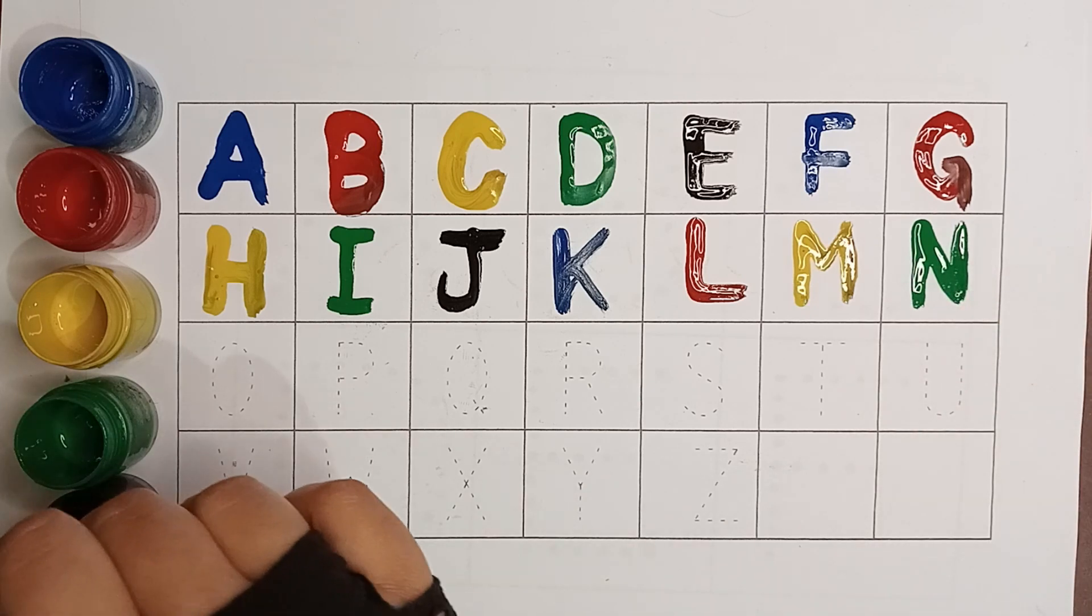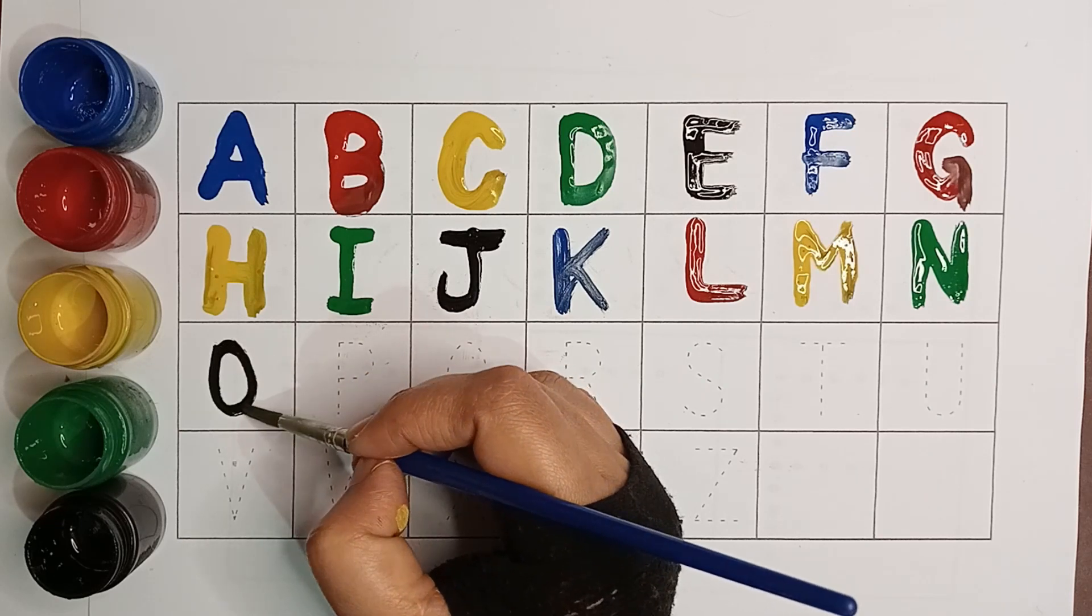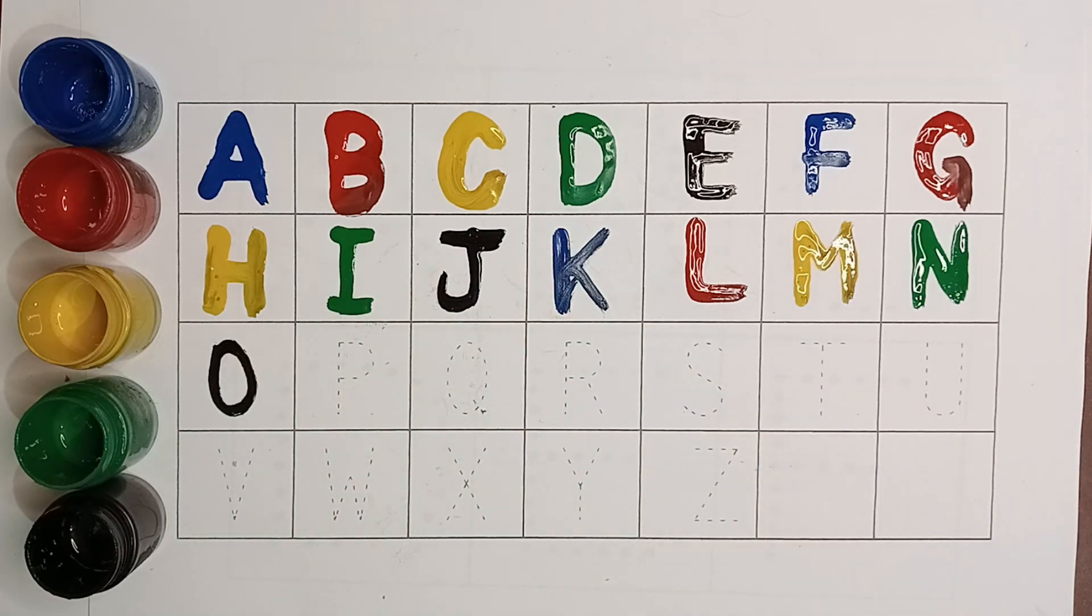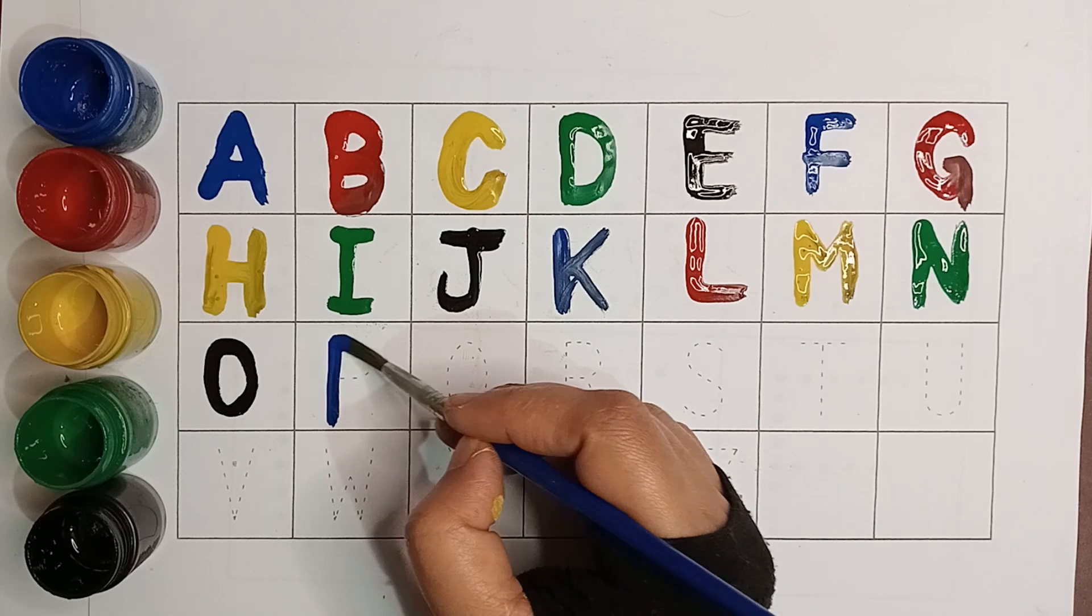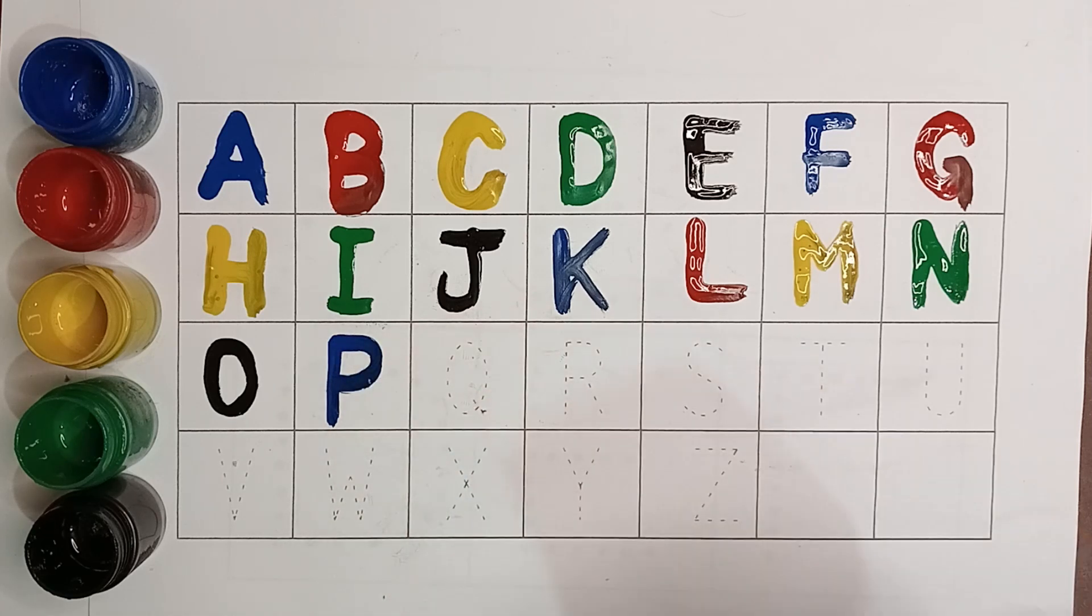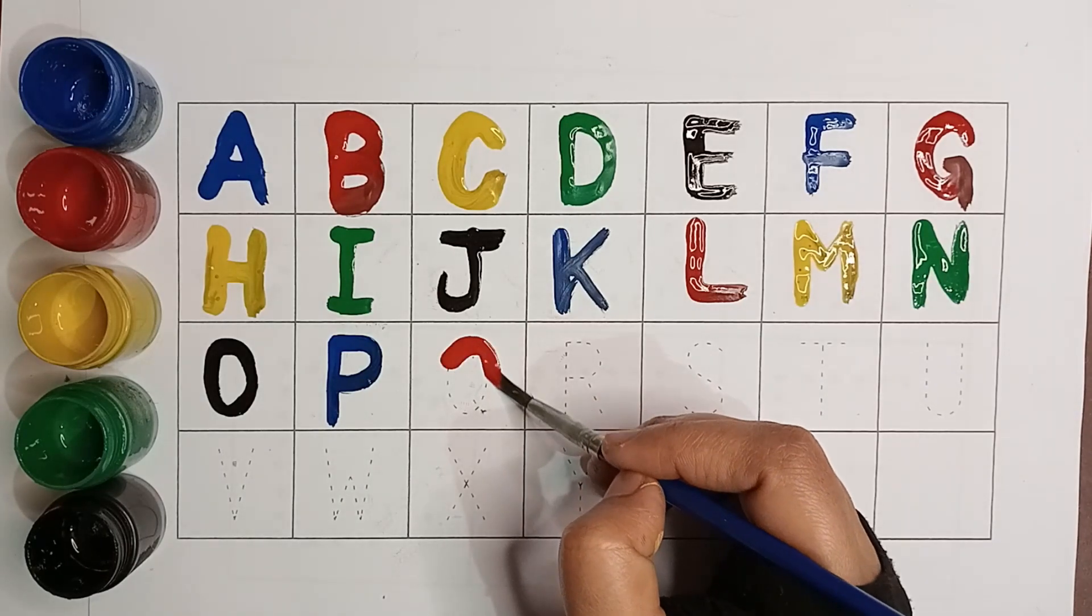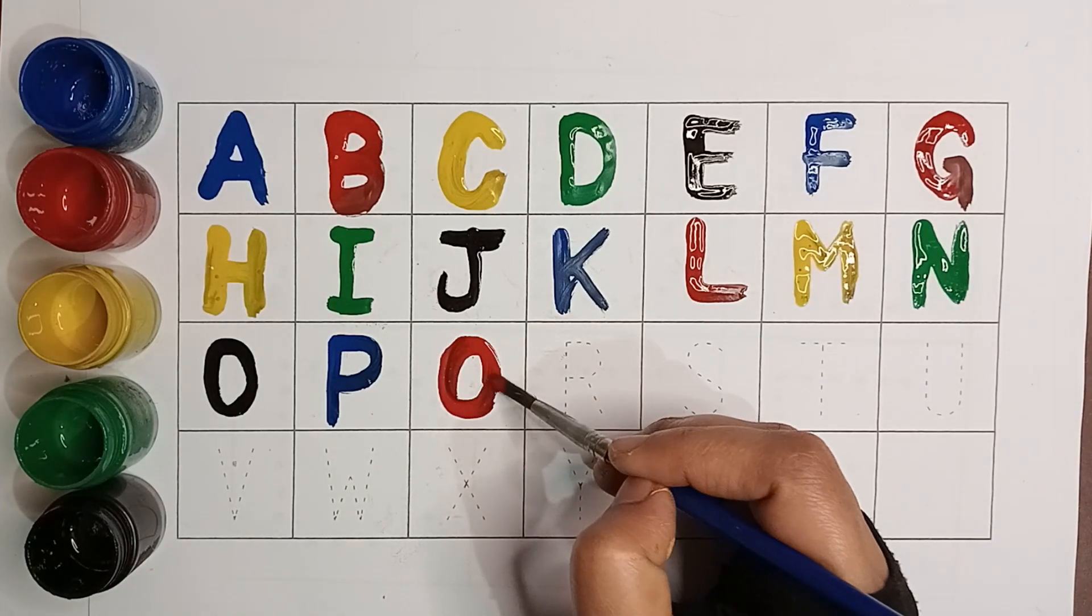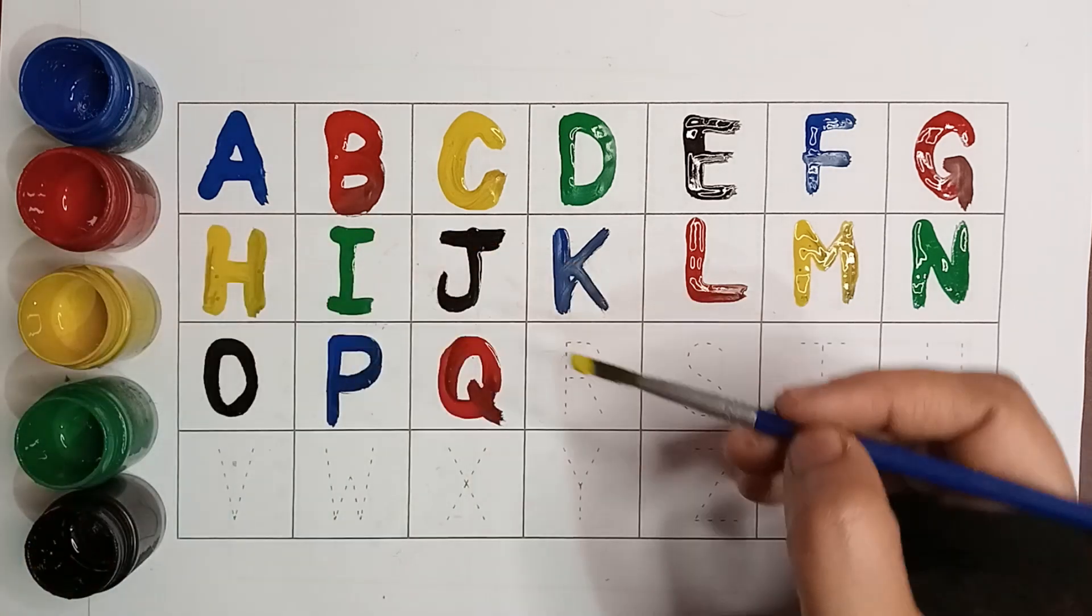Black color O. O for oaks. Blue color P. P for pain. Red color Q. Q for queen. Yellow color R.